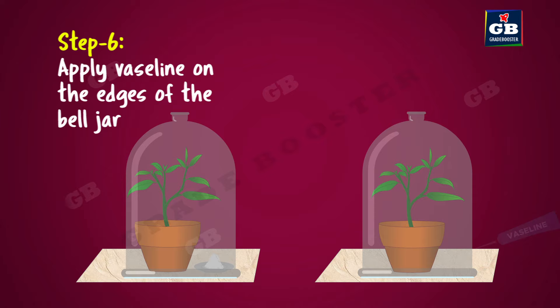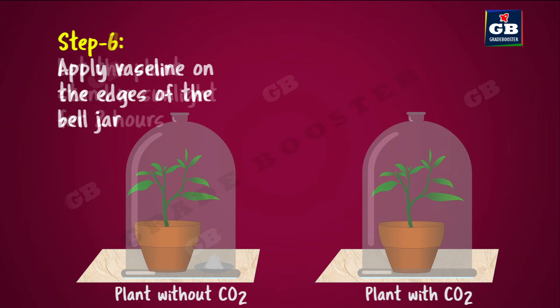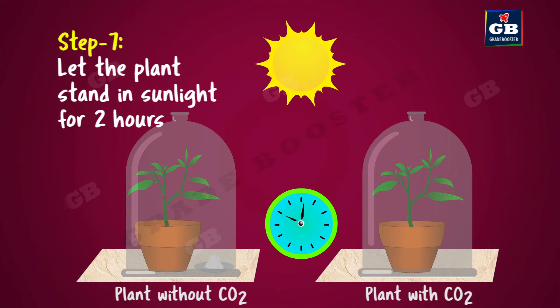But still there is some air — and therefore some carbon dioxide — inside the bell jar. That is why we placed a watch glass with potassium hydroxide, which will absorb the carbon dioxide present in the jar. Now our setup is ready: one plant without CO₂ and another plant with some CO₂. Let the plants stand in sunlight for two hours.